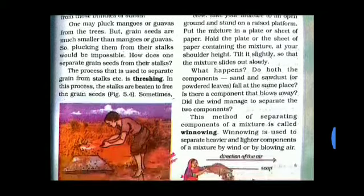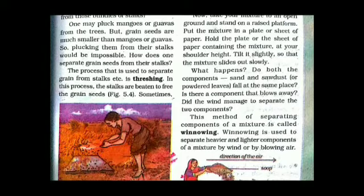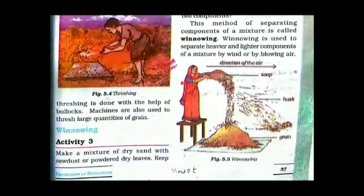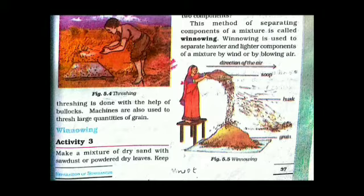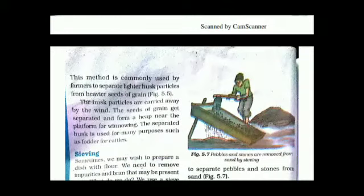This method of separating components of a mixture is called winnowing. Winnowing is used to separate heavier and lighter components of a mixture by wind or by blowing air. This method is commonly used by farmers.